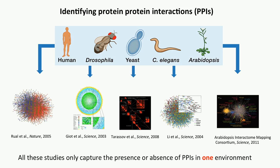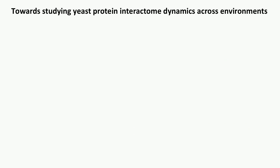However, all of those studies only capture the absence or presence of PPIs in one environment. It's possible that in different environments, some protein-protein interactions may emerge, and even for those known protein-protein interactions, they may change in a different environment. So we still miss some information in terms of protein-protein interactions, and we propose to study the protein-protein interactome dynamics across different environments.